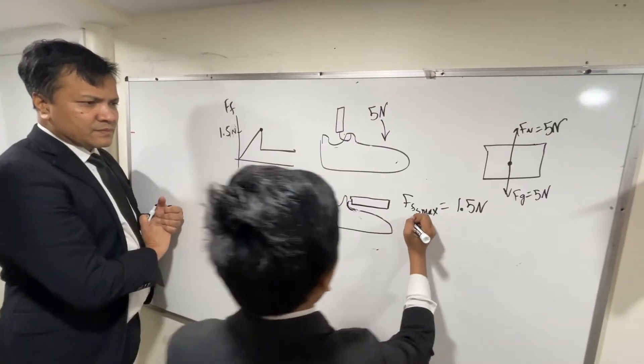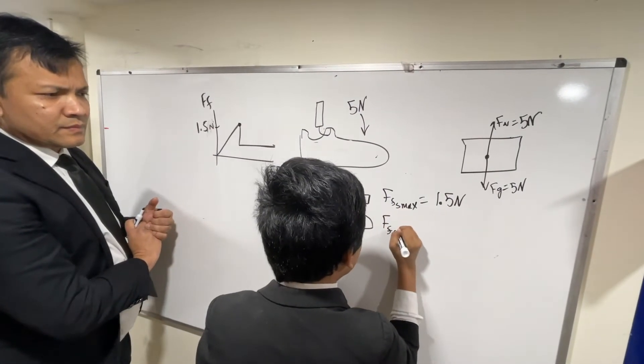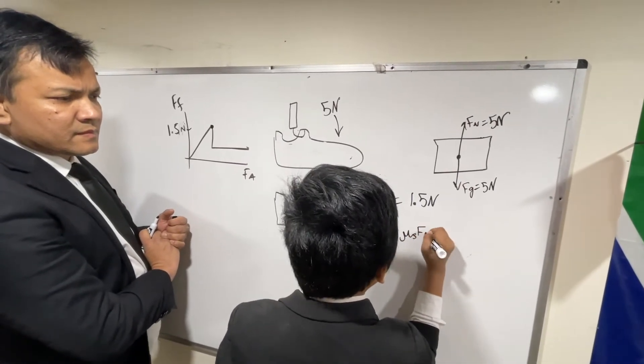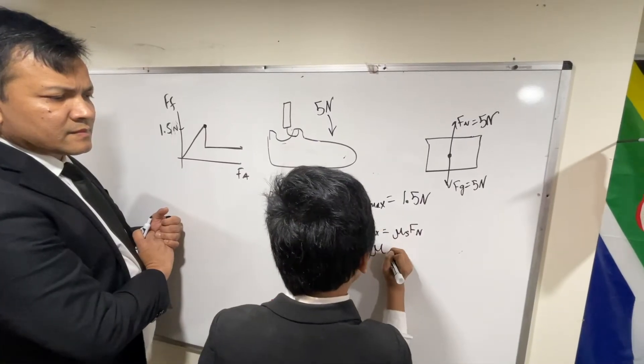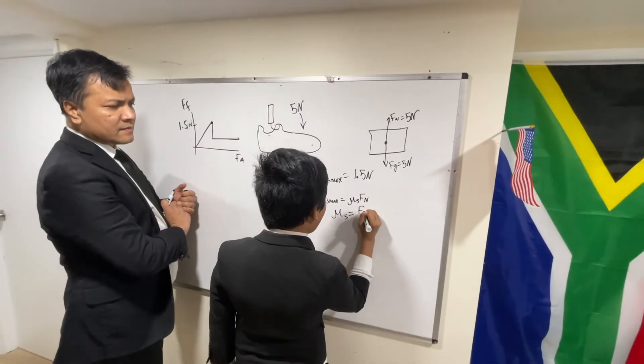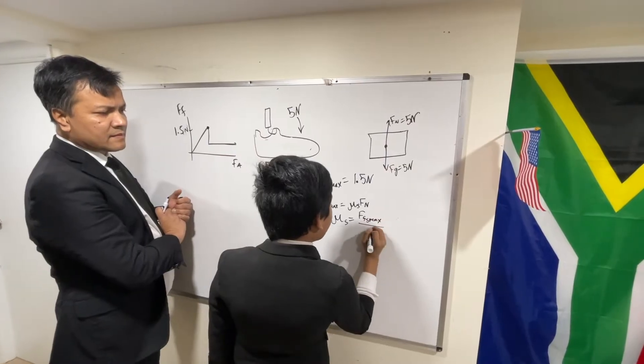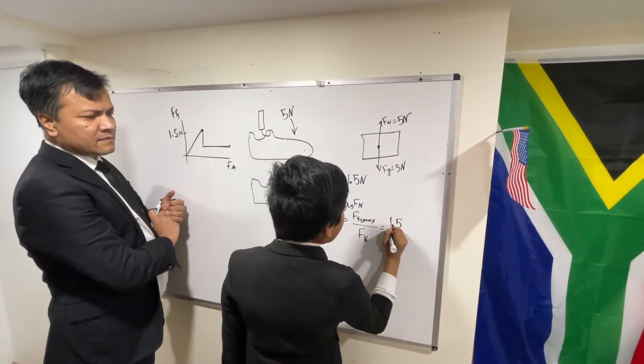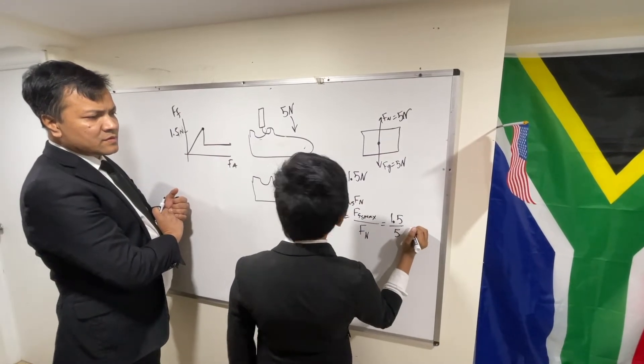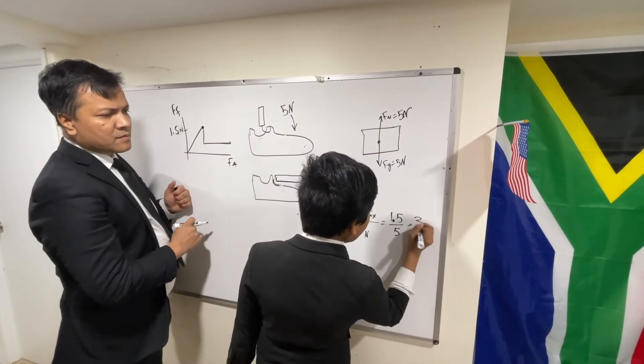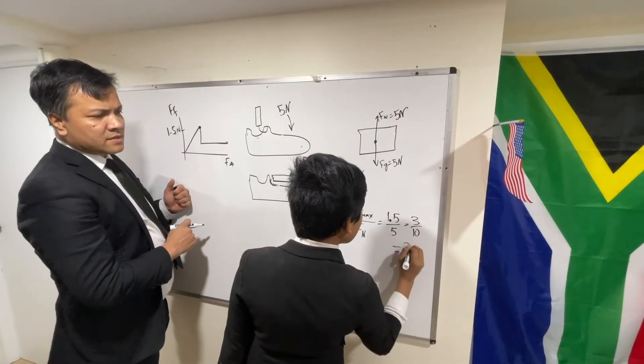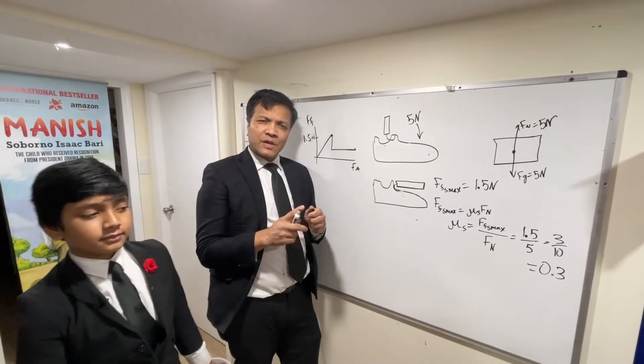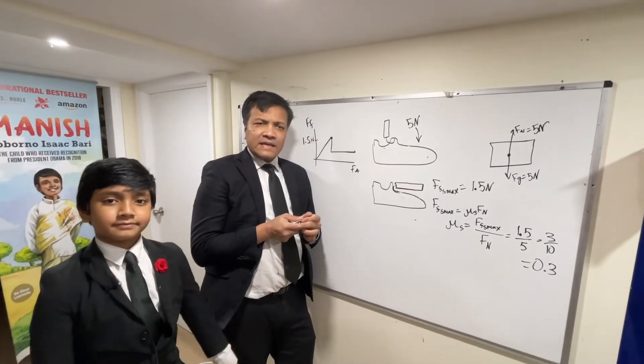So this is 1.5 Newtons. Okay good, now what do we need to find? Mu. So let's go find mu. Well we know that Ffs max is simply equal to mu s times Fn. So now solving for mu s, we get mu s is Ff max over Fn. And now just getting our data, we find that it is 1.5 over 5, which is also 3 over 10, or 0.3.